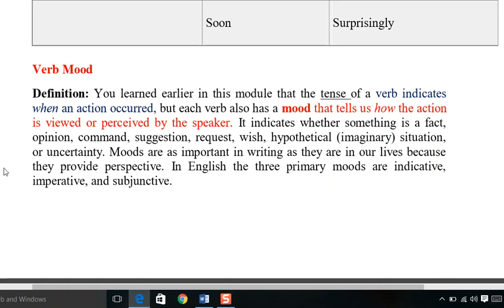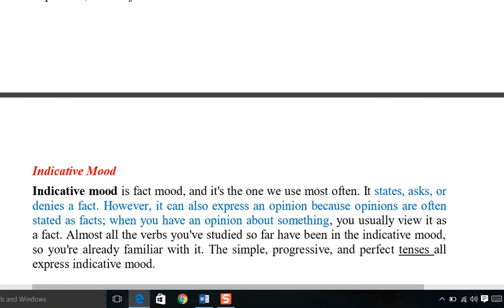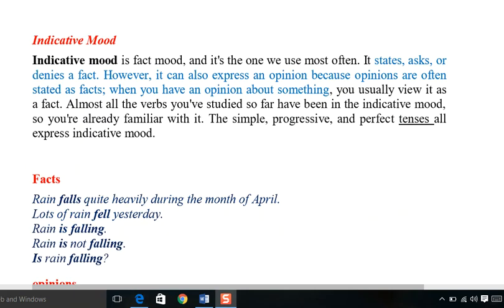Moods are as important in writing as they are in our lives because they provide perspective. In English, three primary moods are indicative, imperative, and subjunctive. The indicative mood expresses something happening — it indicates the occurrence of something. For example, 'I speak loudly' — it indicates the action.